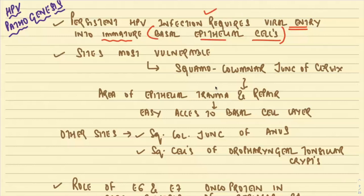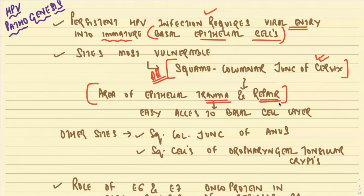The incidence of pre-invasive and invasive cervical carcinomas is maximum at the squamo-columnar junction because there is a high chance of a break in the basal epithelium allowing virus entry. This is a high-risk area because it is the area of epithelial trauma as well as epithelial repair, and the virus finds very easy access to the immature basal cell layer.